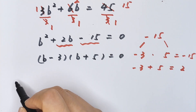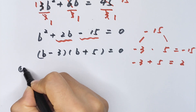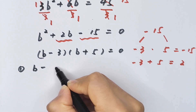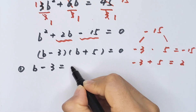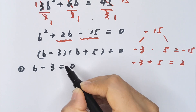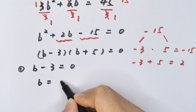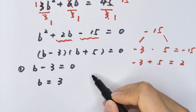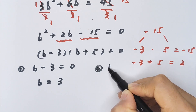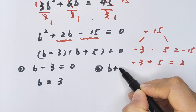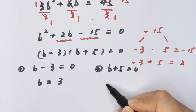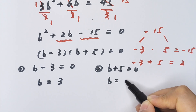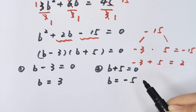This gives two cases: b minus 3 equals 0, so b equals 3; and b plus 5 equals 0, so b equals negative 5.